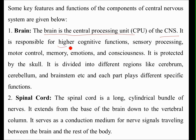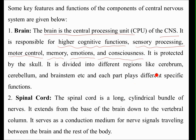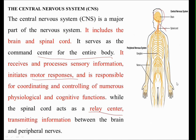The brain is responsible for higher cognitive function, sensory processing, motor control, memory, emotions, and consciousness. It is protected by the skull and is divided into regions like the cerebrum, cerebellum, and brainstem, each playing specific functions. Together the brain and spinal cord are considered the central nervous system.